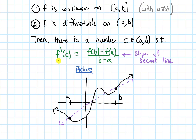The left-hand side, the derivative, represents the slope of a tangent line. So graphically, what this is saying is: as long as my function is continuous on the closed interval and differentiable on the open interval — smooth, no sharp corners — there's going to be at least one point, this number c, in between a and b, where the slope of the tangent line is the same as the slope of the secant line.